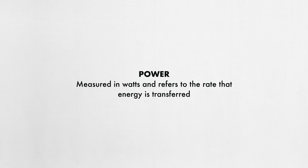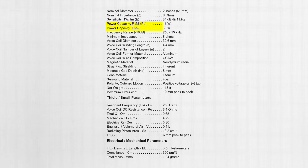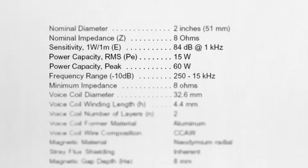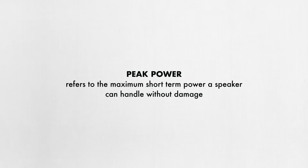Power is measured in watts and refers to the rate that energy is transferred. The power handling rating of your speaker can also be found in the technical specifications. You'll probably find various power ratings in your speaker's technical specs — peak power, continuous power, etc. Peak power refers to the maximum power a speaker can handle without damage, and this specification can often be misleading. We're more concerned with how much power the speaker can handle over an extended period of time. This is the continuous power rating of the speaker.